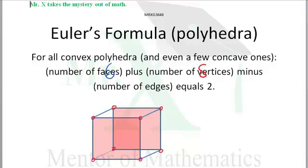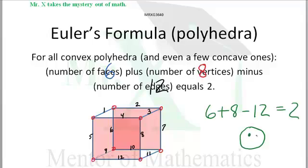8 vertices minus the number of edges: 1, 2, 3, 4, 5, 6, 7, 8, 9, 10, 11, 12. Is that going to work out? Bully.